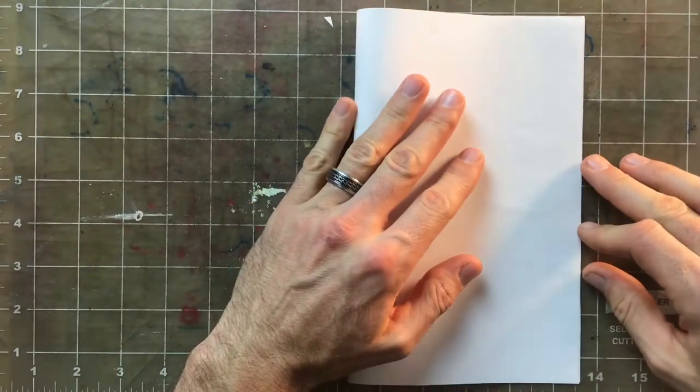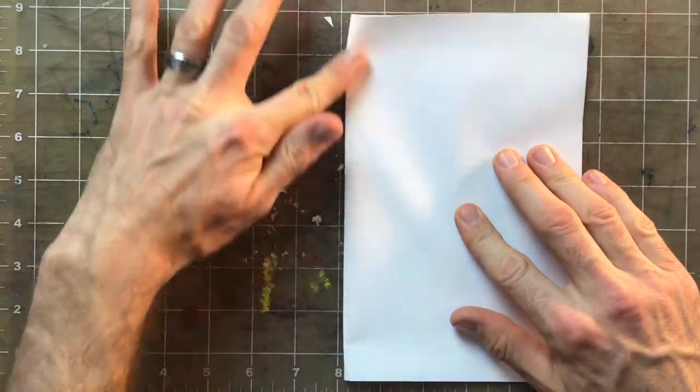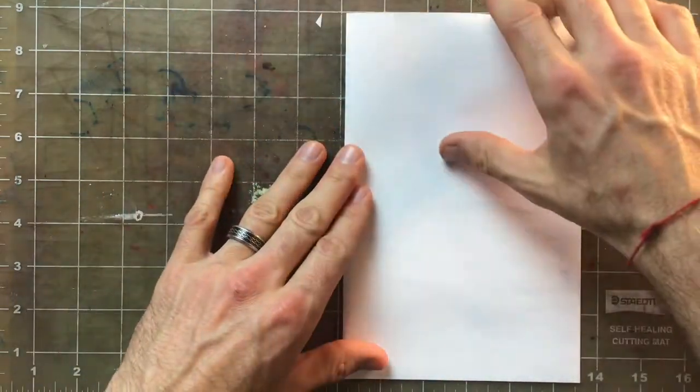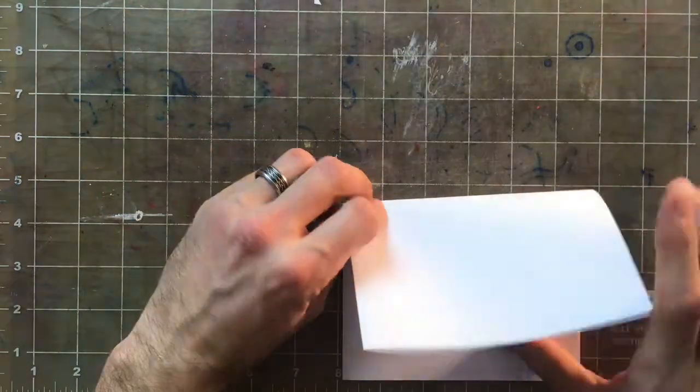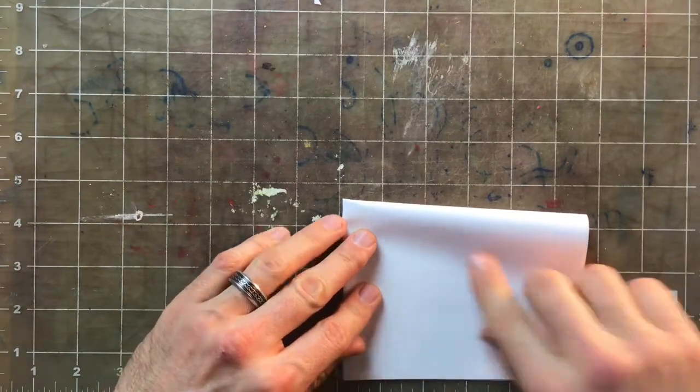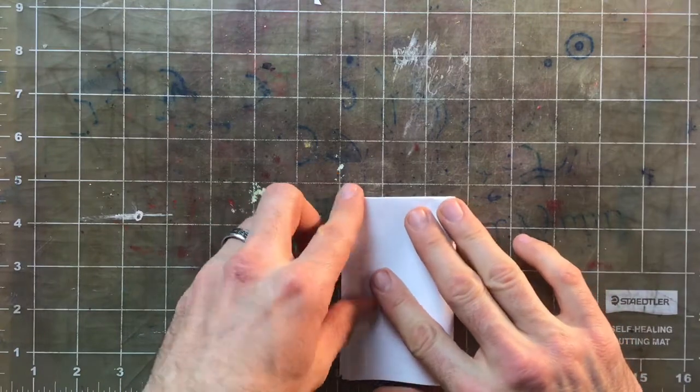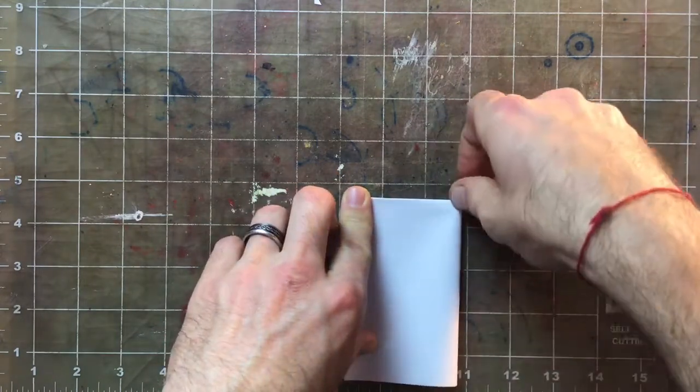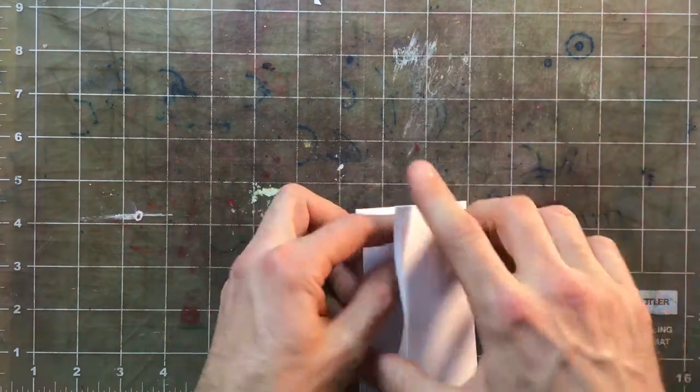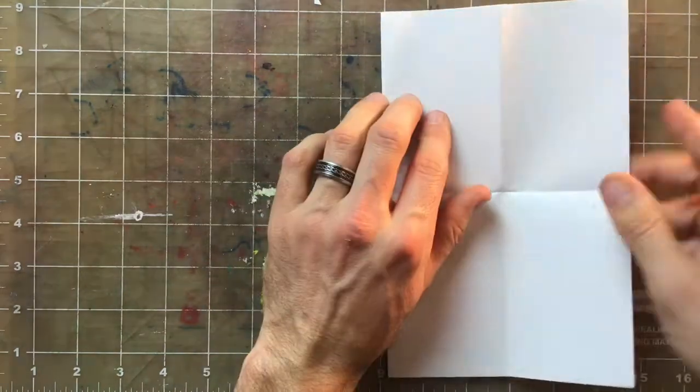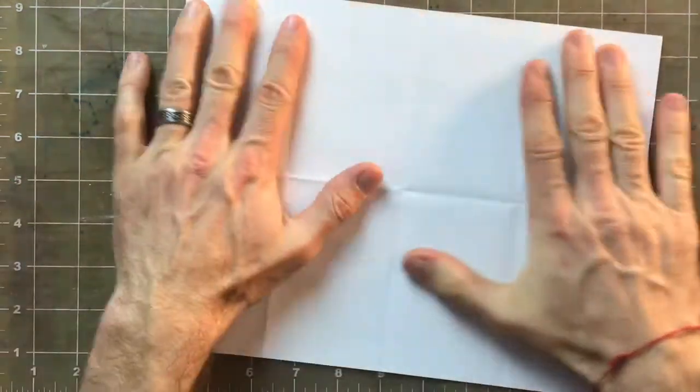So as we begin I'm going to start by folding my paper in half one way and then folding it in half again and then folding it in half a third time. So in the end my paper will be divided into eight sections, rectangle type shapes.